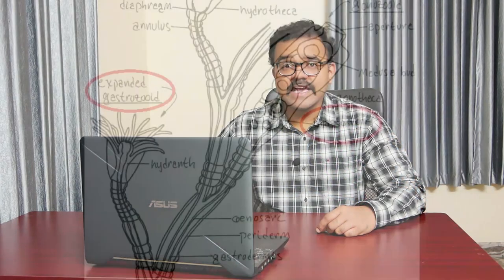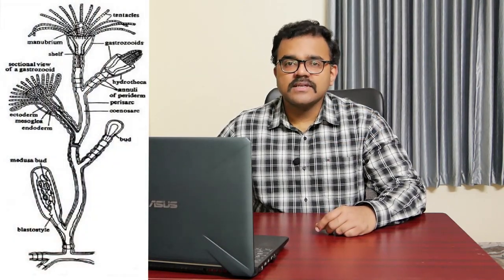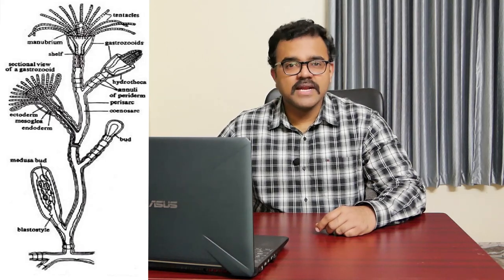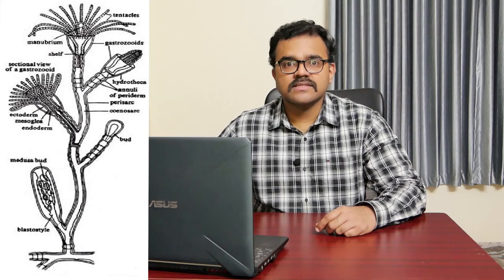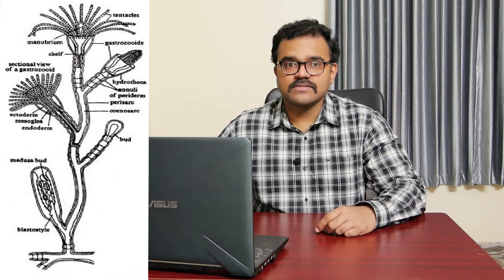The hydrocollus has two types of zooids: the gastrozooids, having a nutritive function, and the blastostyles, which have a reproductive function. In addition to the fully formed gastrozooids and blastostyles, the lateral branches bear short club-like structures which are either primordial or developing gastrozooids or blastostyles.